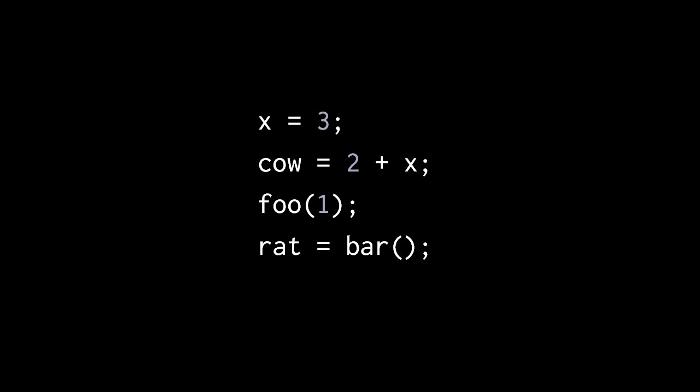Expression statements in Pidgin all end with semicolons. So here we have four expression statements. The first assigns the value of 3 to x. The second assigns 2 plus x to cow. The third calls the function foo with the argument 1. And the fourth calls bar with no arguments and assigns its returned value to rat.